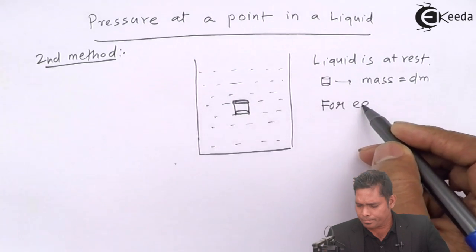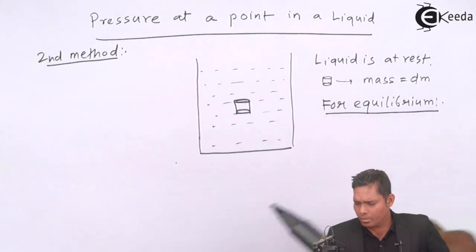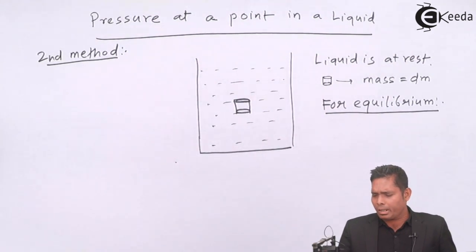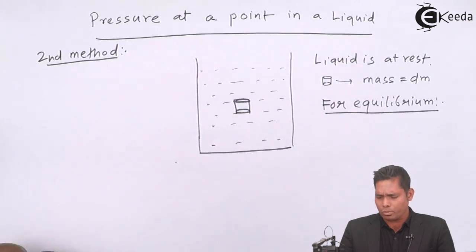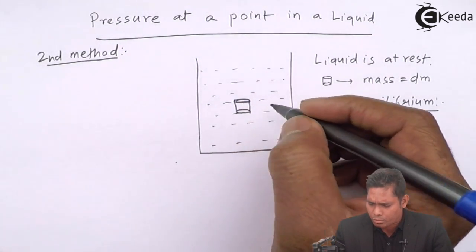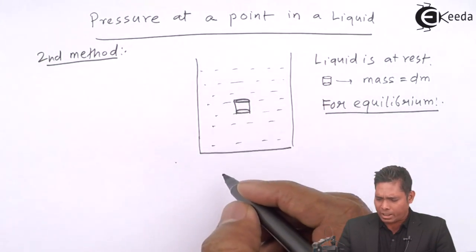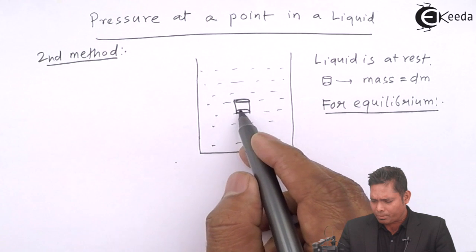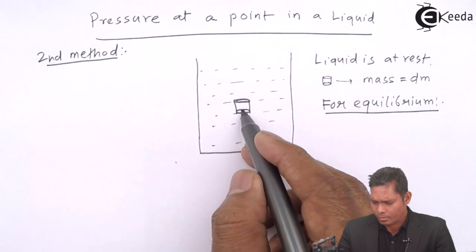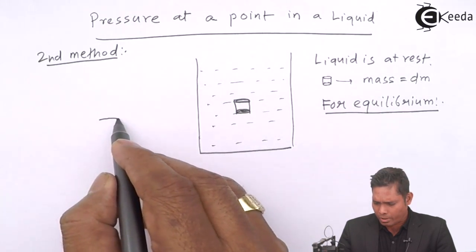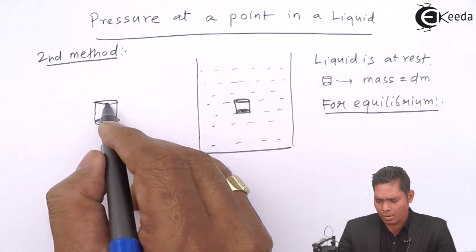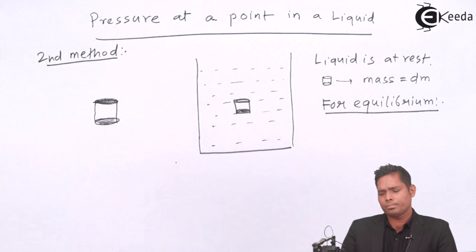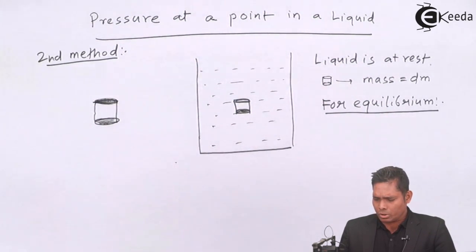Since this element is at rest, it should be in equilibrium. For the equilibrium of this cross section, I will calculate the forces acting on this portion of the liquid — they should cancel out, giving net force equal to zero. Suppose the area of cross section here is dA, and the area of cross section at the other face is also dA.